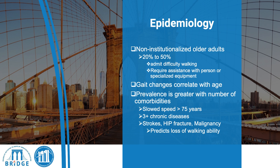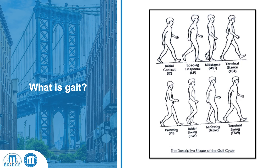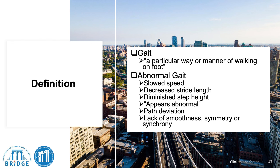Gait changes correlate with age, and gait abnormalities have a greater prevalence with a greater number of underlying medical problems. If the older adult has slow speed, three or more underlying medical problems or chronic diseases, or has had a stroke, a hip fracture, or any malignancy, it's a clear predictor of gait abnormality and loss of ability to walk.